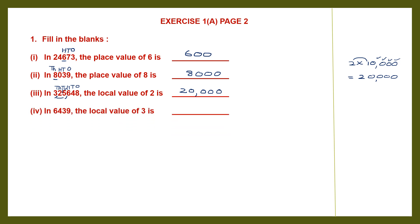Now the fourth number: in 6,439, the local value or place value of 3. So let's find out the place value of 3. 1s, 10s — so 3 is in the 10s place. 3 into 10 is 30. That is the local value of 3.